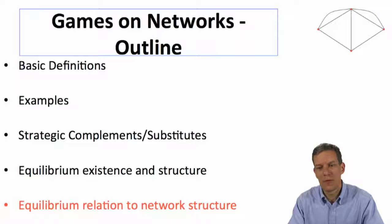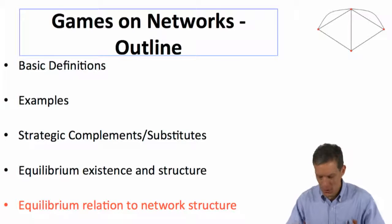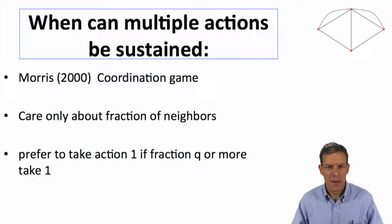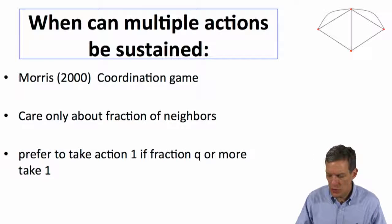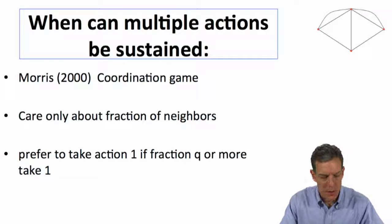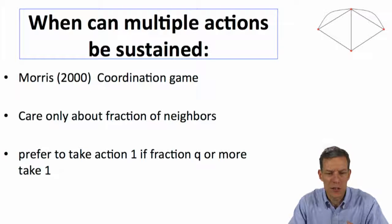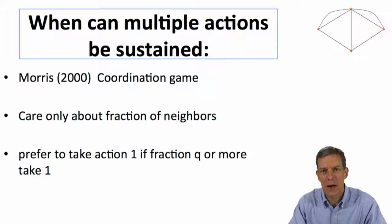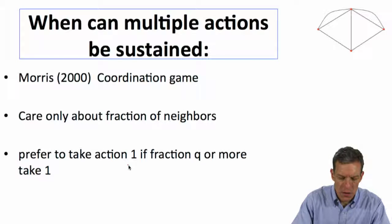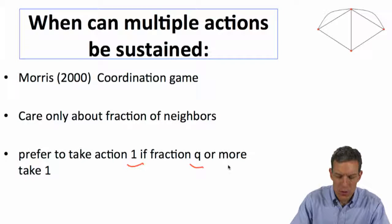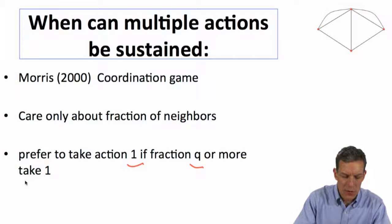This is an interesting question conceptually, so let's take a look at it. We're going to look at a paper by Stephen Morris — a simple coordination game. This is a game where you care only about the fraction of your neighbors taking a given action. You prefer to take action one if a fraction Q or more of your neighbors take action one.